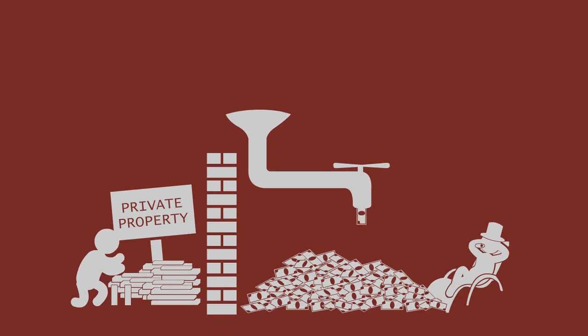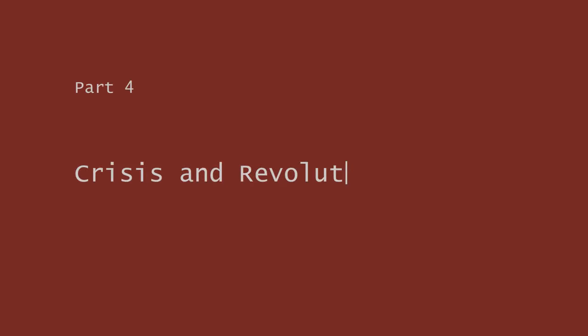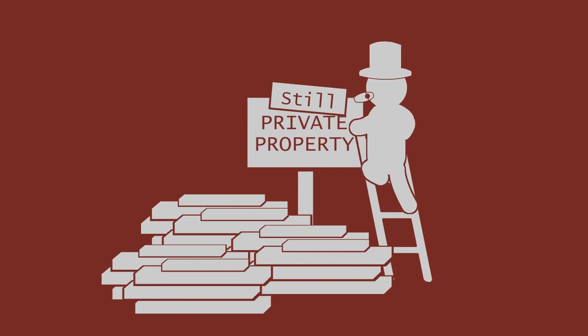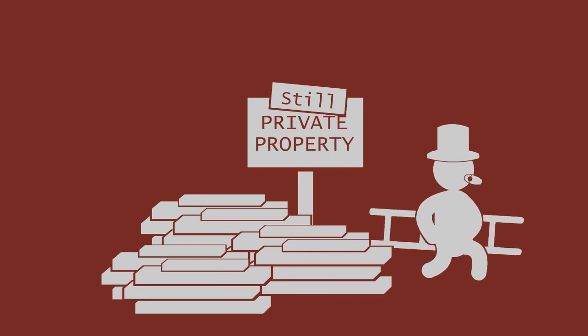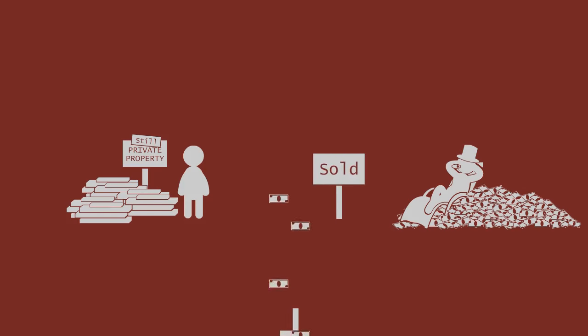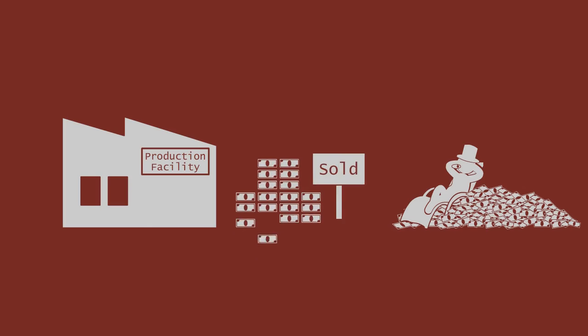So we are presented with a choice: to accept exploitation as a part of how we live, or declare private property inherently unjust and abolish it altogether. Let us assume that capitalists are not a fan of abolishing private property. They decide to keep control of the means of production and keep profiting through exploiting people. So our capitalist keeps taking the surplus value you produce, uses it to get better productive equipment so you can produce more, and makes an even larger profit.